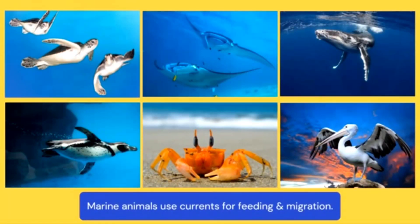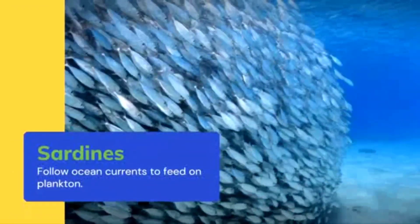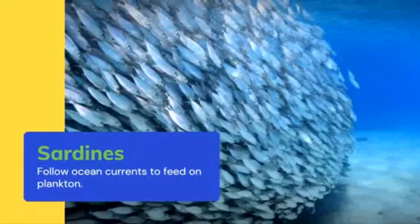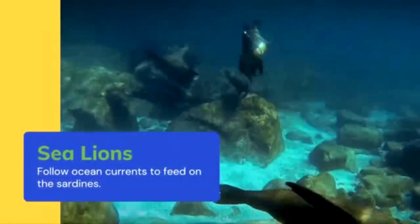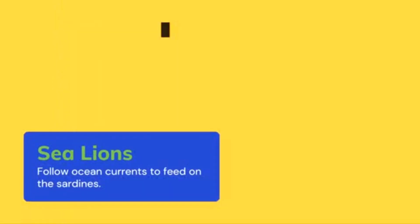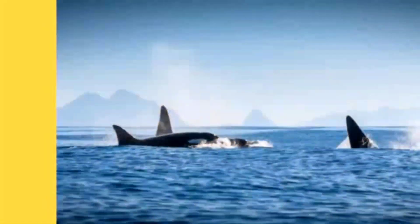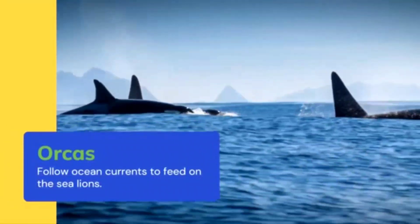Animals also use currents to catch food in one giant food chain. For example, sardines follow currents feeding on plankton, sea lions follow feeding on the sardines, and orcas follow behind feeding on the sea lions.